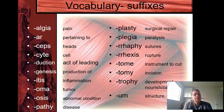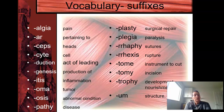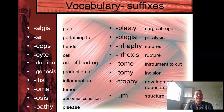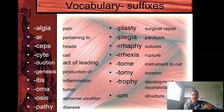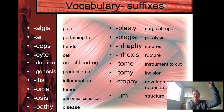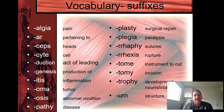Moving on to suffixes, which go at the end of the root words. ALGEA means pain — so if you put fibromyalgia together, it refers to connective tissue pain. AR means pertaining to. CEPS means heads — your biceps means two muscles that come to a head, and triceps means three that come to a head.